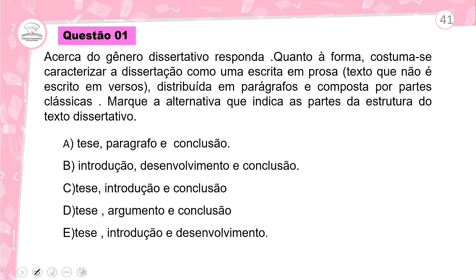Marque a alternativa que indica a parte da estrutura do texto dissertativo. O texto em prosa é linha contínua, começa com letra maiúscula e termina com ponto final. Nós temos: A - tese, parágrafo e conclusão; B - introdução, desenvolvimento e conclusão; C - tese, introdução e conclusão; D - tese, argumento e conclusão; E - tese, introdução e desenvolvimento. Ele está perguntando da estrutura do texto dissertativo.